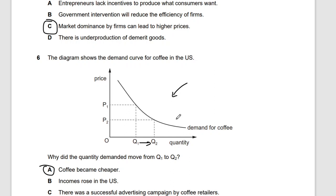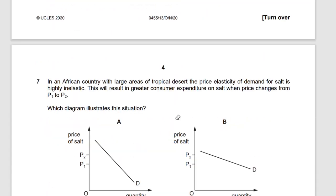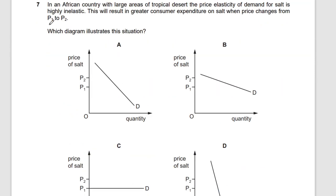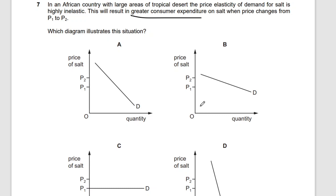Question seven: in an African country, the price elasticity of demand for salt is highly inelastic. This results in greater consumer expenditure on salt when price changes from P1 to P2. Which diagram illustrates this? When there's greater consumer expenditure, price should be high and quantity low. The answer is D.